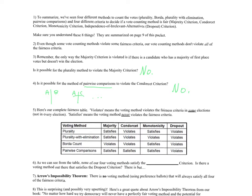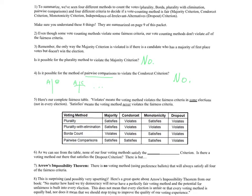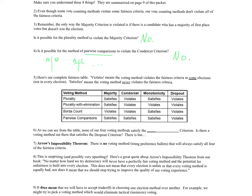Here's our complete fairness table. 'Violates' means the voting method violates the fairness criteria in some elections, not every election. 'Satisfies' means the voting method never violates the fairness criteria. Plurality always satisfies the majority criterion — if you have a majority candidate they will always win under plurality. And pairwise comparisons always satisfies the Condorcet criterion: if someone wins all their head-to-head matchups they will always win pairwise comparisons.